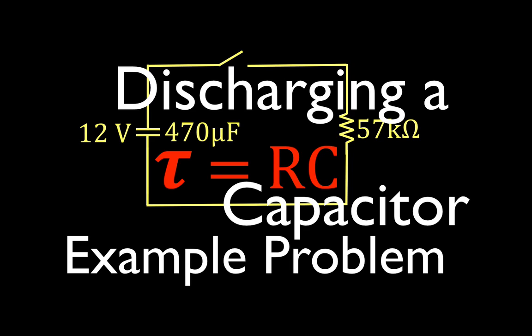In this video, we're going to go over an example problem for discharging a capacitor. This is a situation where we have a 470 microfarad capacitor which has previously been charged by a 12 volt source, so there's 12 volts across the capacitor. We're going to discharge the capacitor through a 57k ohm resistor.